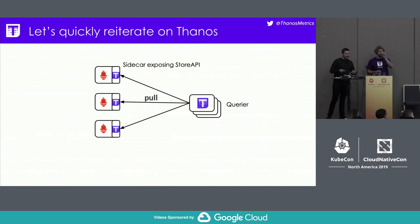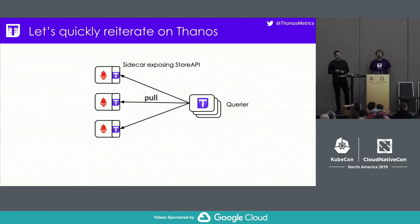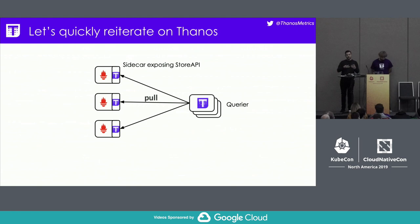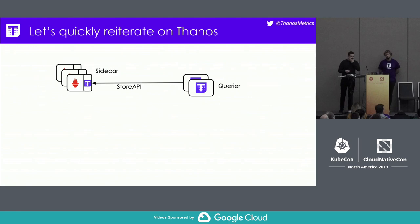Now let's jump back into technical things. Let's reiterate on a couple of architectural things about Thanos. This is probably one of the most common setups you see running Thanos: a set of Prometheus servers with the Thanos sidecar next to it. The sidecar exposes something we call the Store API — the universal language that every component within Thanos speaks. The querier calls out via the Store API to these sidecars, and that's how you get a global view of your data.